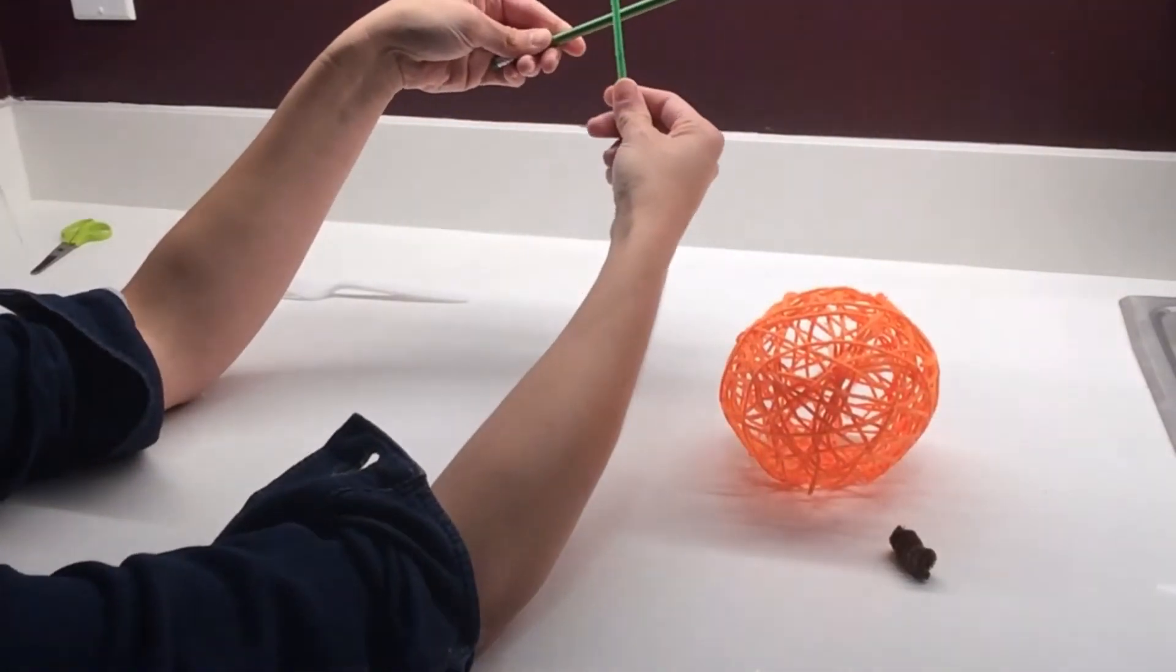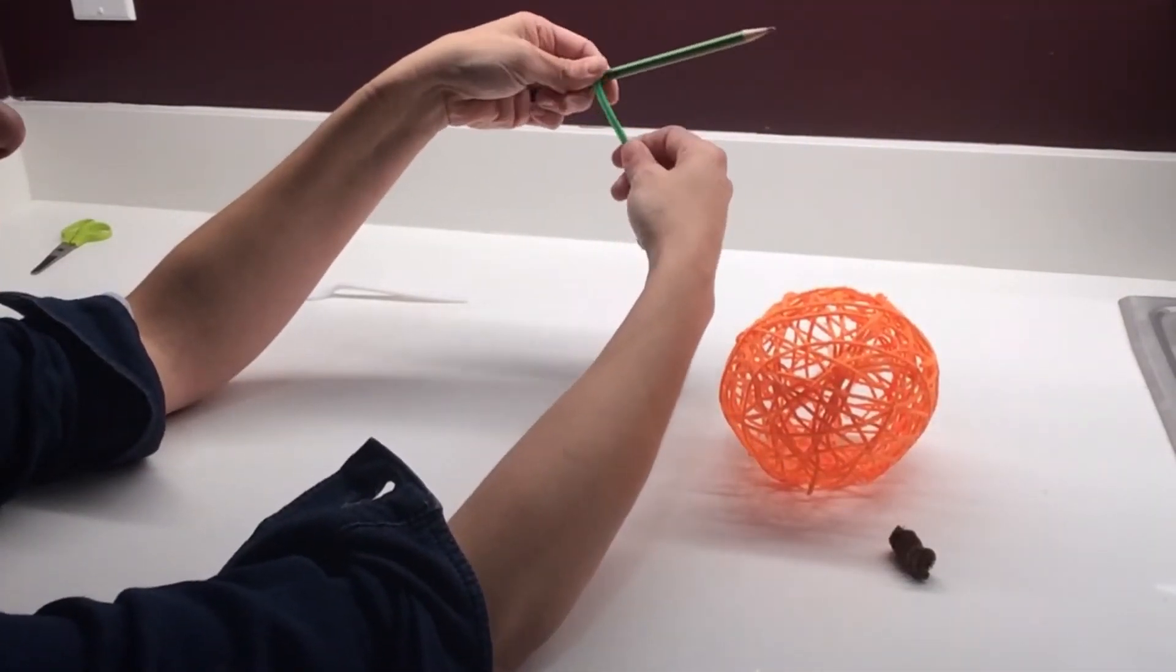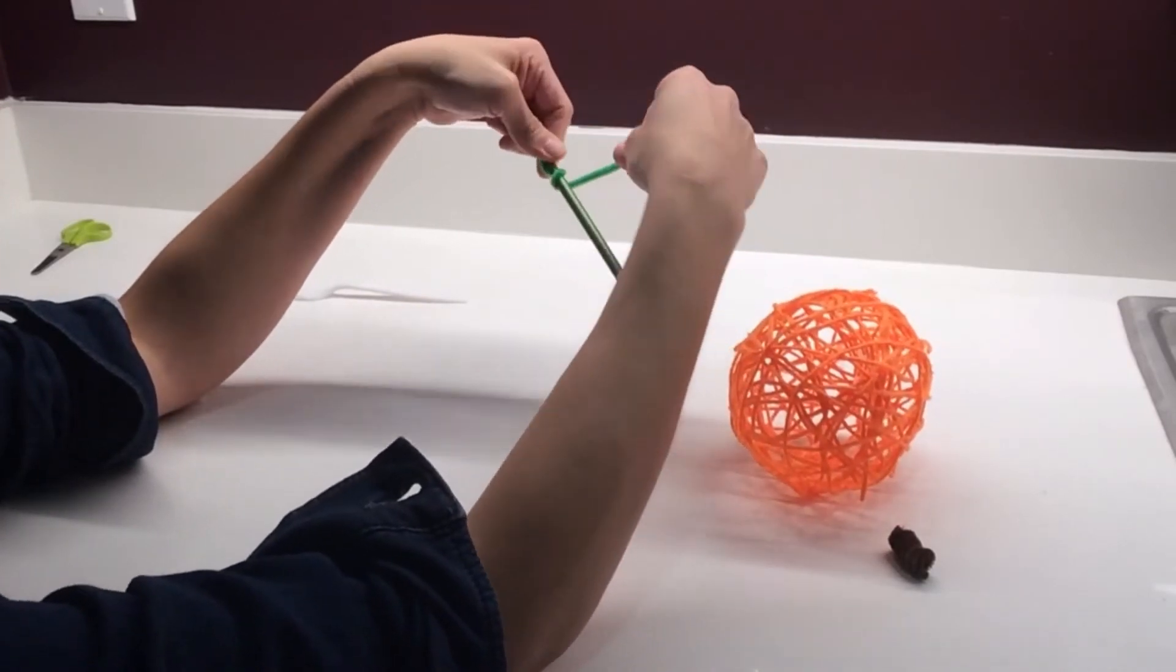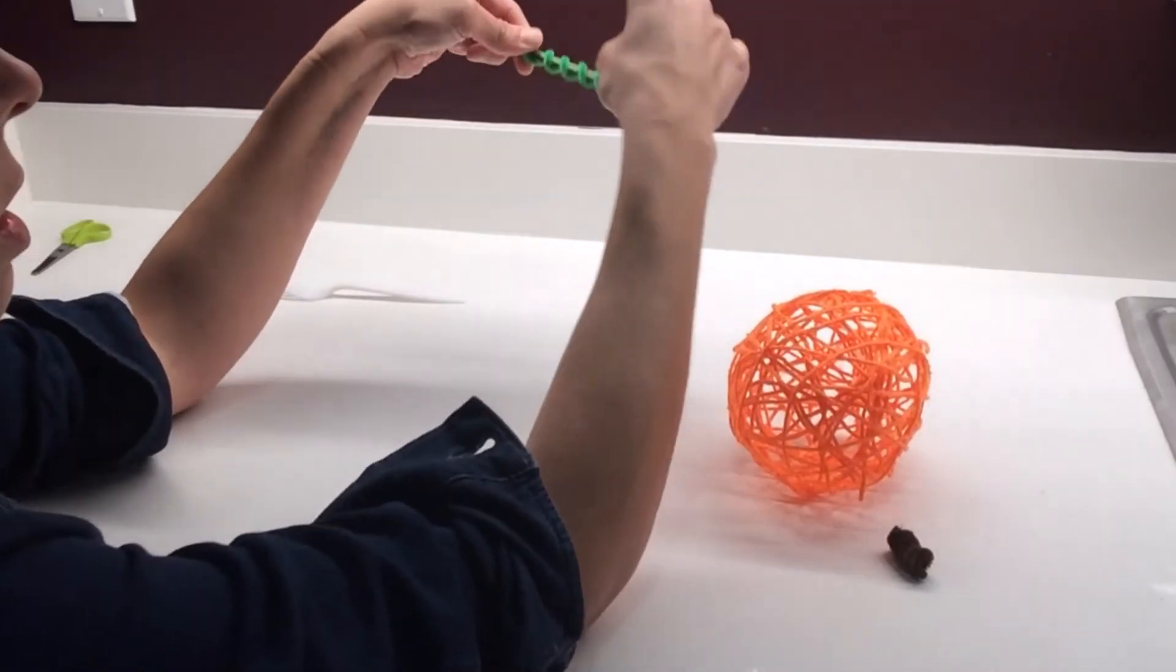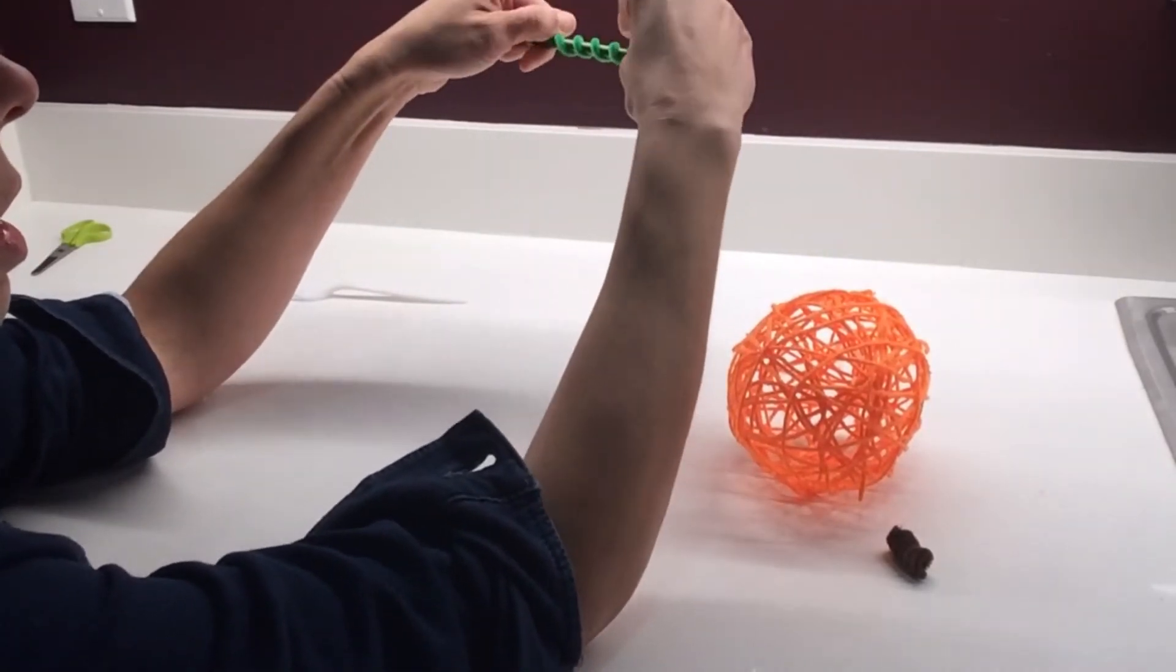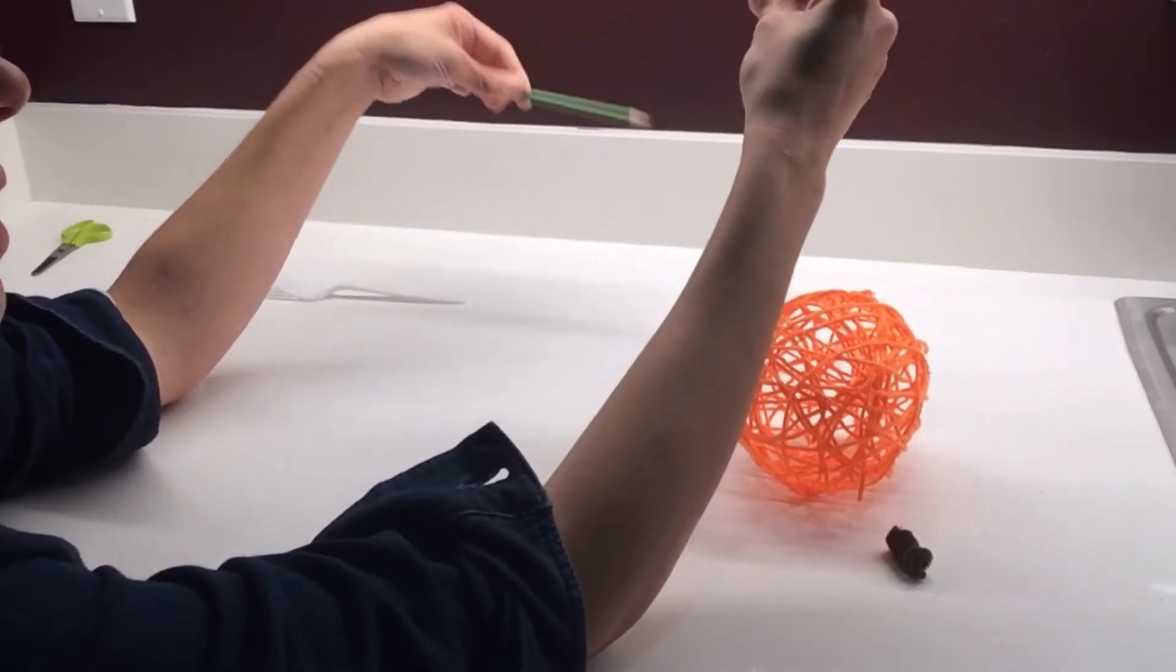Now take your green pipe cleaner and wrap it around the pencil in a looser coil. And this is going to be the vine. And then you can slide that off.